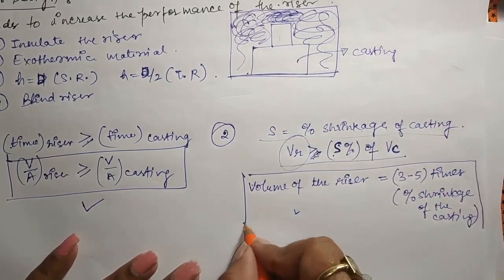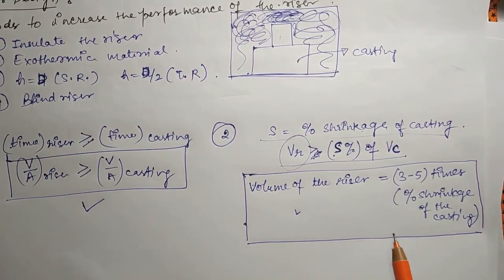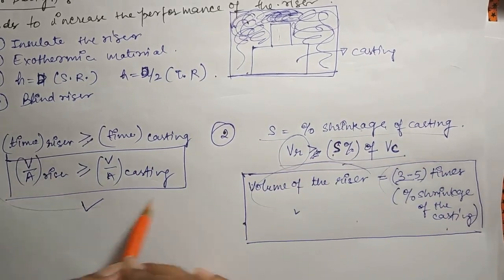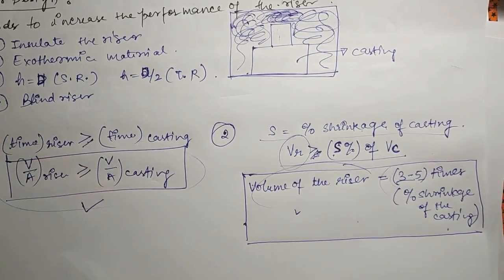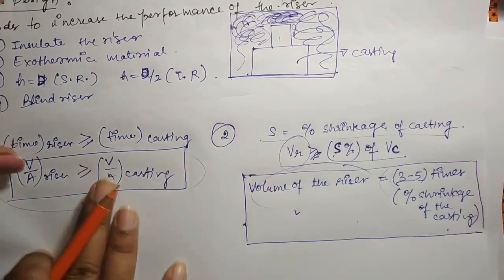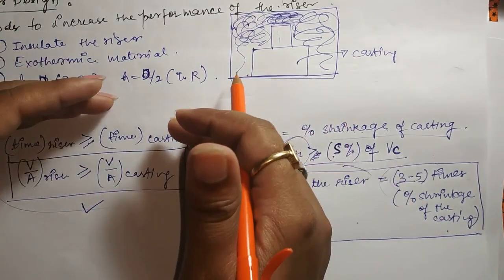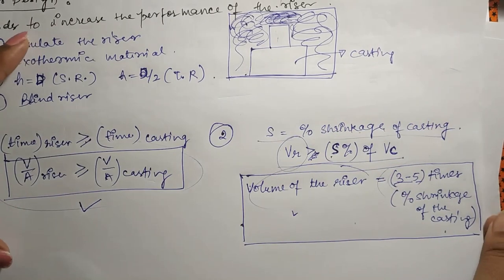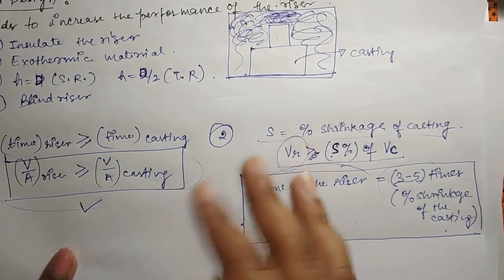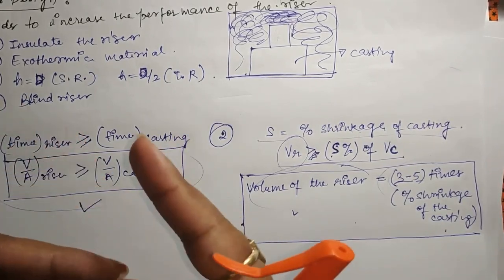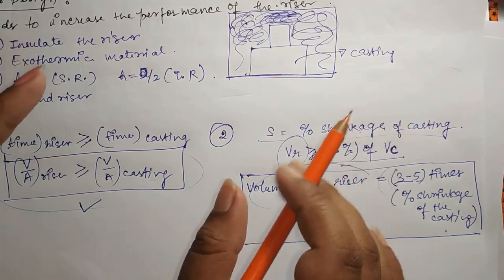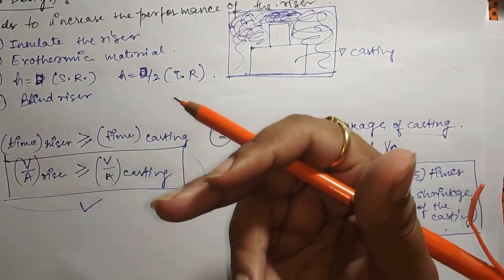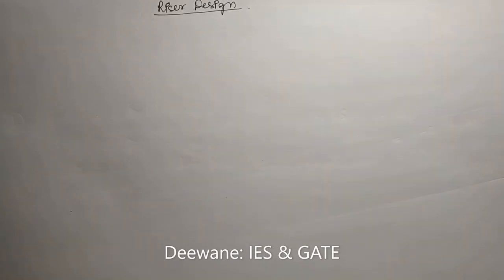In the question, they will tell you how many times — 3 to 4 times — and from the percentage shrinkage condition you will get some volume of the riser. From the V/A condition you will also get a volume. Both conditions must be satisfied and you take whichever is more demanding. We will solve questions regarding this after completing most of the syllabus, then discuss Chvorinov's rule, Kane's method, modified Kane's method, and modulus method.